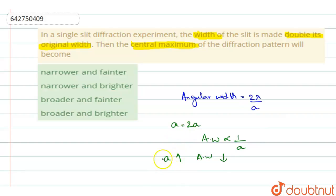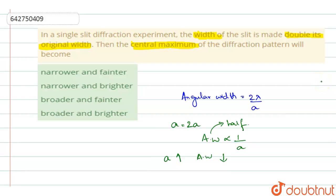If the width of the slit is increased, angular width will decrease. So when the width of the slit is doubled, the angular width decreases to half of the original value.